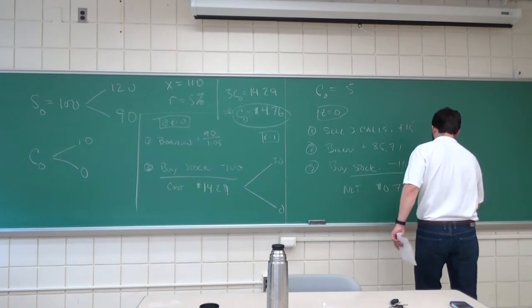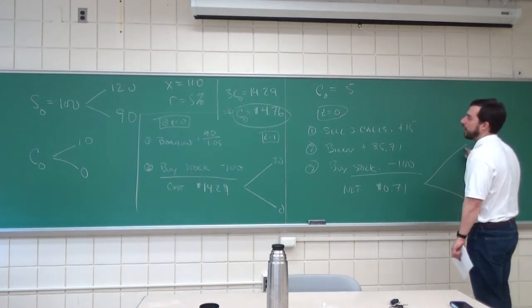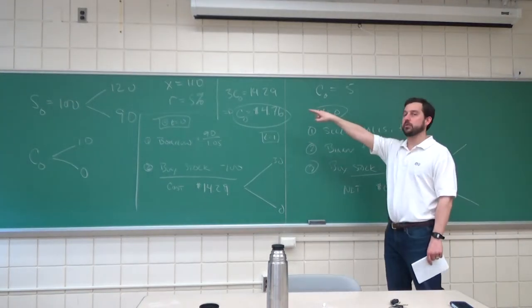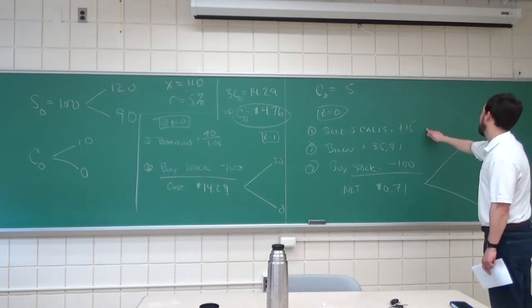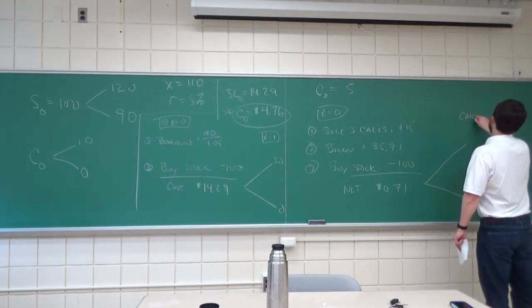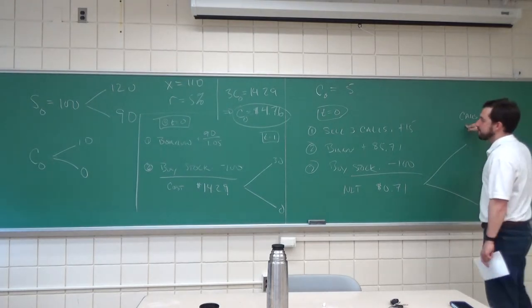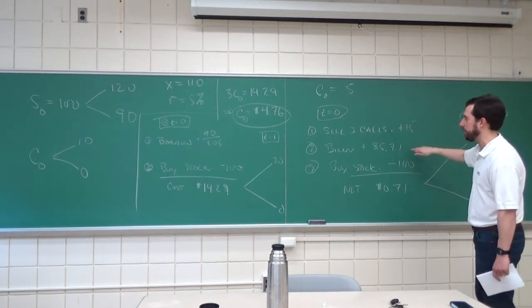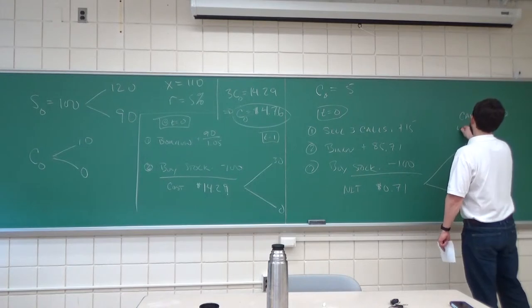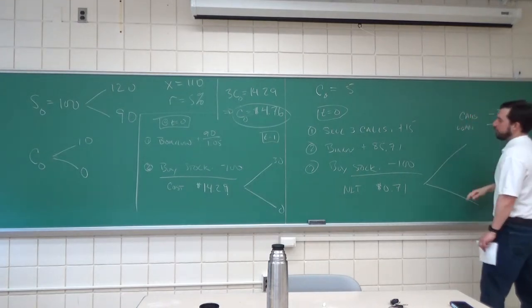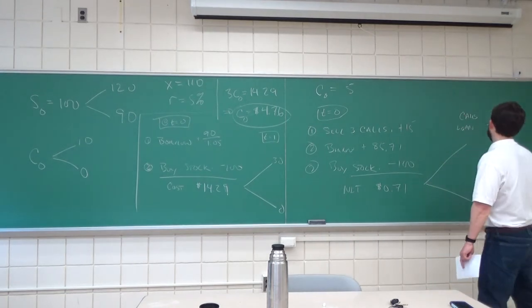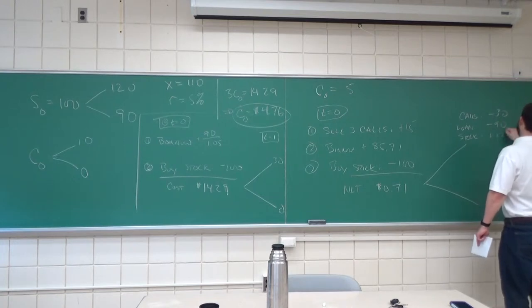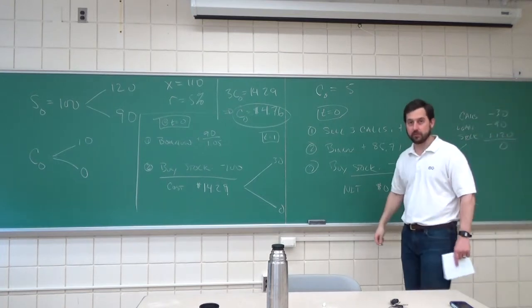So, that's our cash flow at time zero. At time one, if we sold these three calls, each call is going to be worth $120 minus $110, so $10, so we owe $30. So on the calls, we have a cash outflow of $30. We borrowed 85.71, so we have to pay that back, pay the future value of that back, so we pay back $90. So on the loan, we have minus $90, but we bought the stock. The stock is worth $120, so on the stock, we have plus $120, nets to zero, exactly what we want.